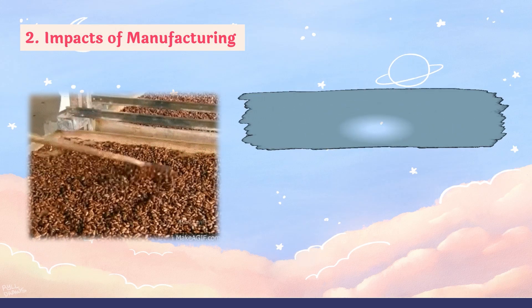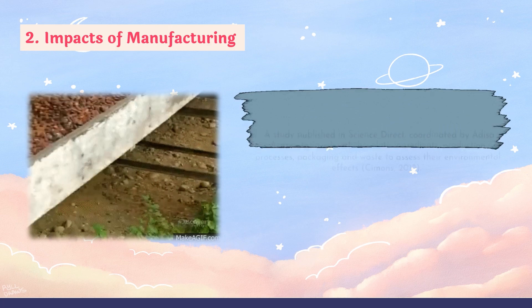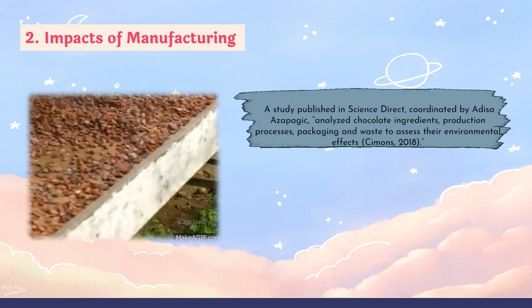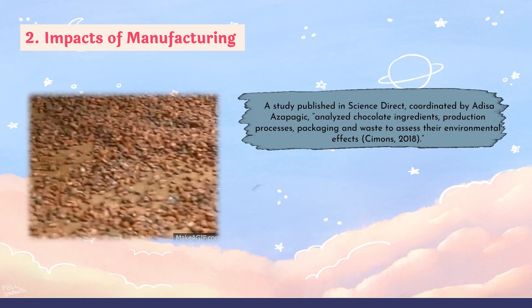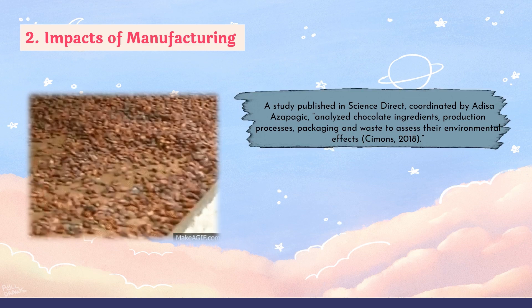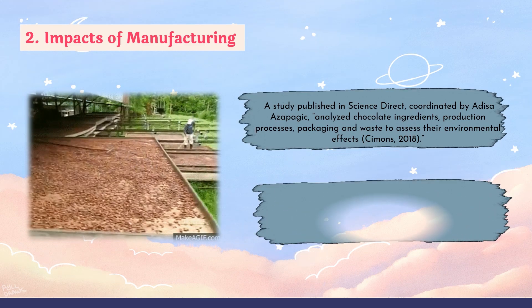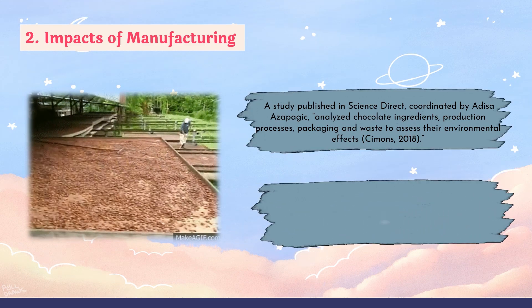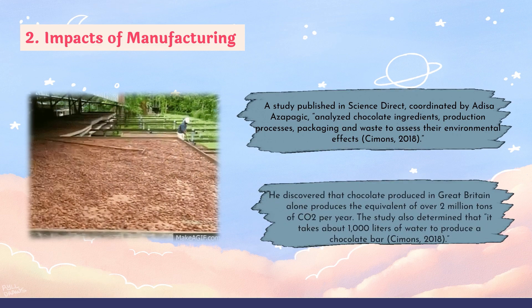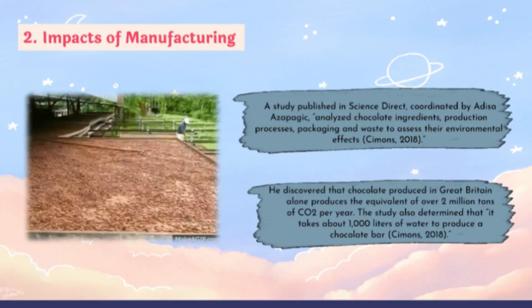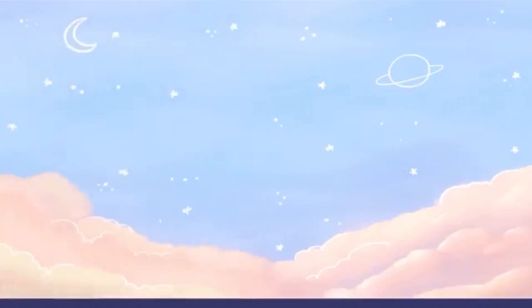Next are the impacts of manufacturing. A study published in Science Direct, coordinated by Addisa Asapache (2018), analyzed chocolate ingredients, production processes, packaging, and waste to assess environmental effects. The study found that chocolate produced in Great Britain alone produces the equivalent of over 2 million tons of CO2 per year, and it takes about 1,000 liters of water to produce a single chocolate bar.